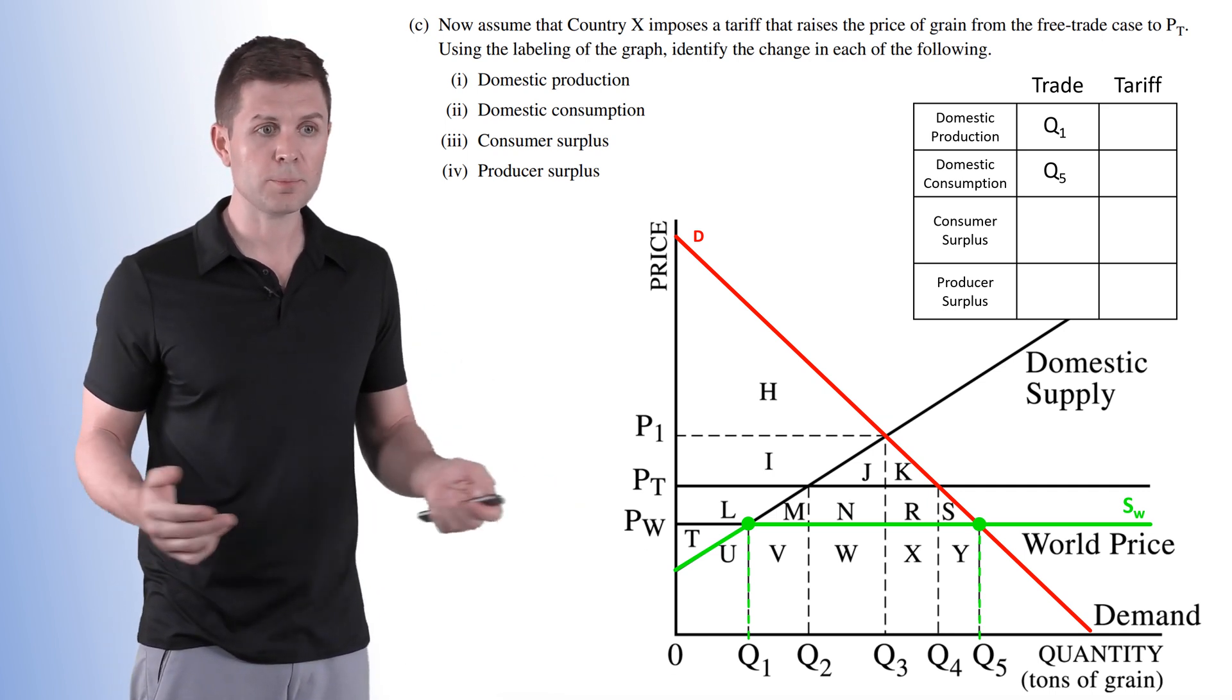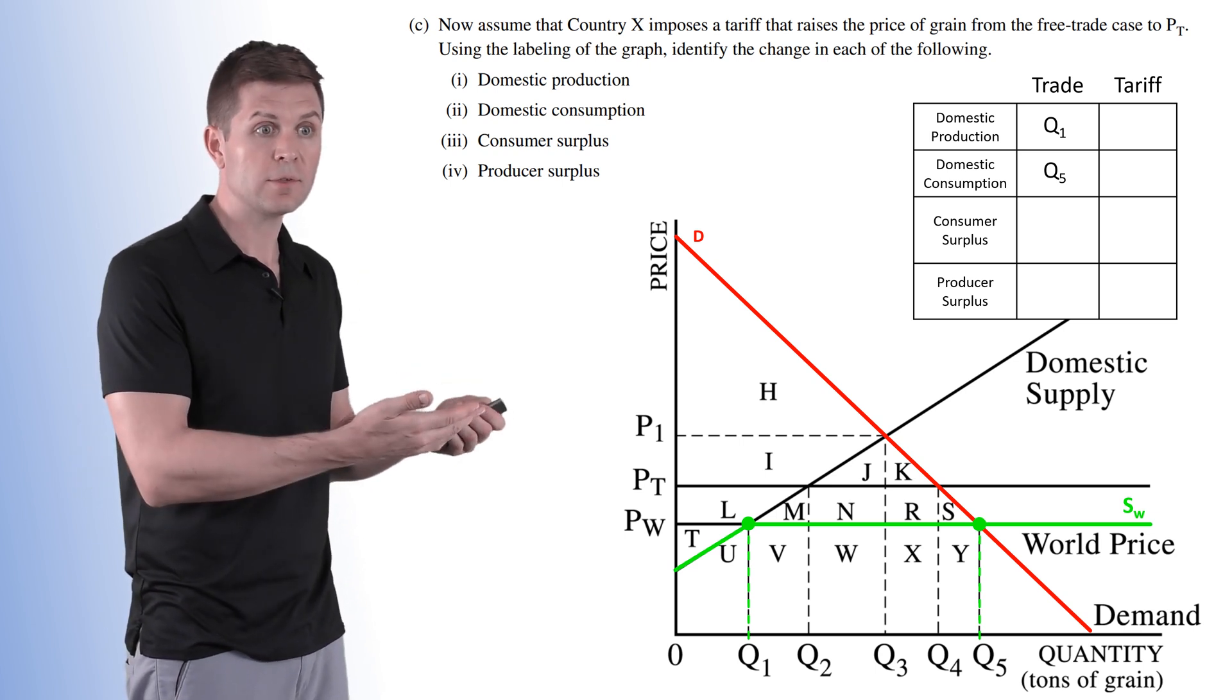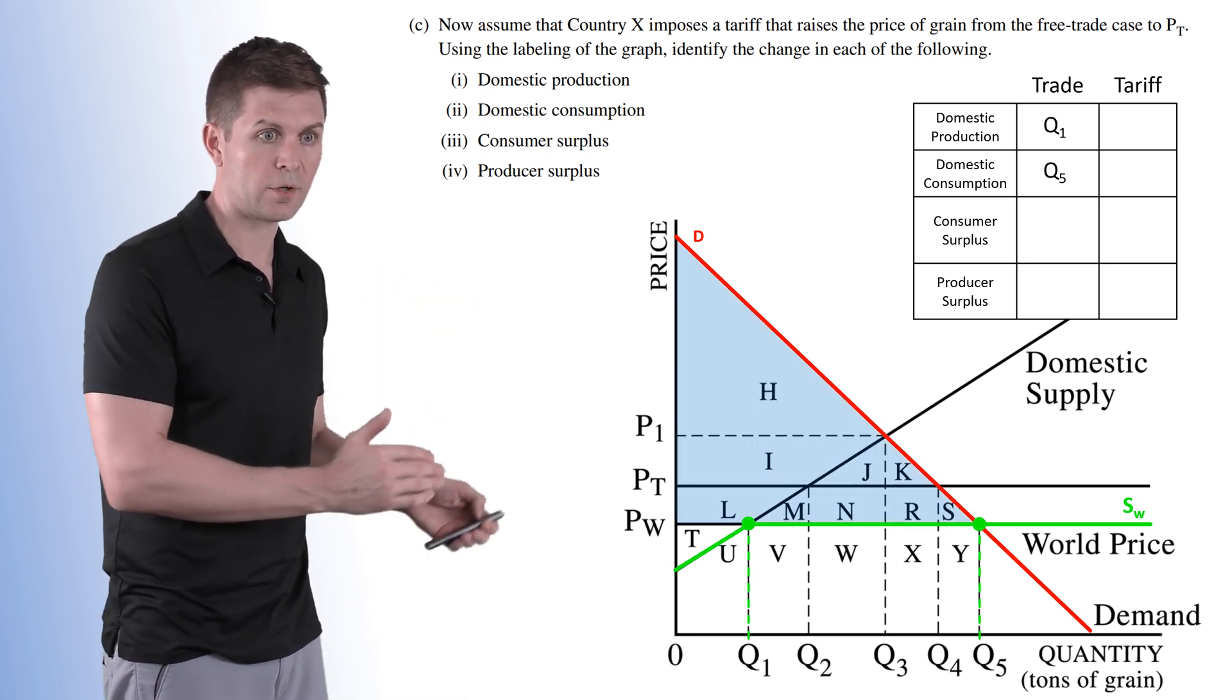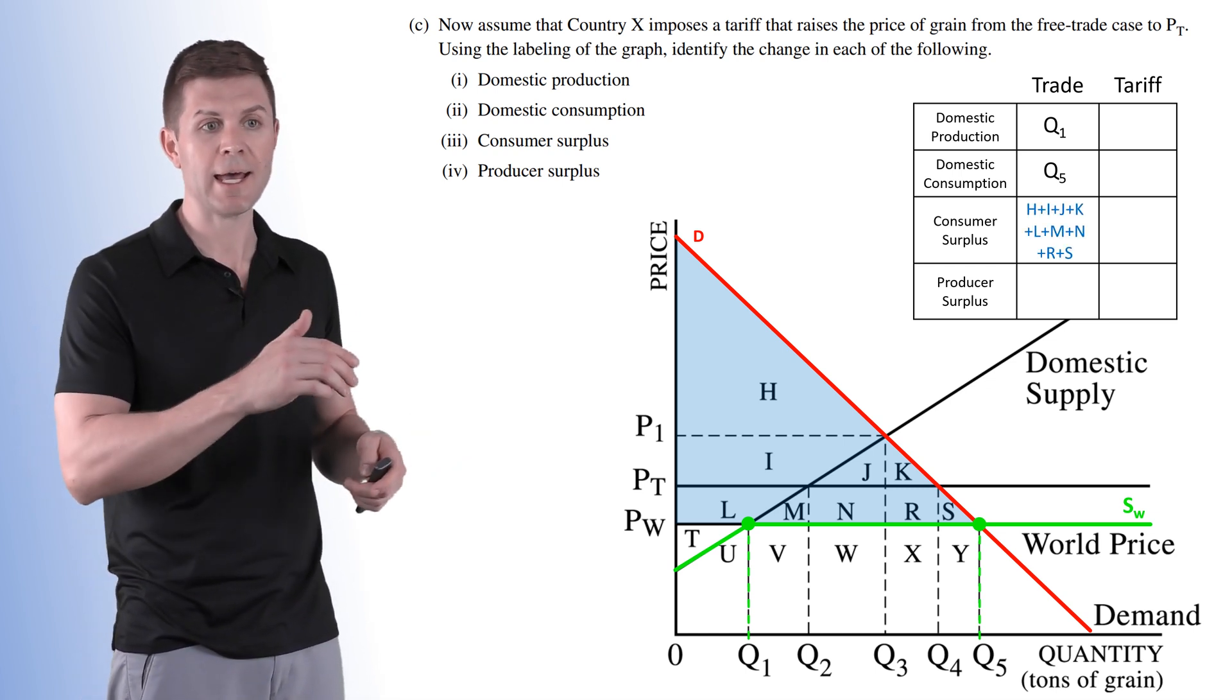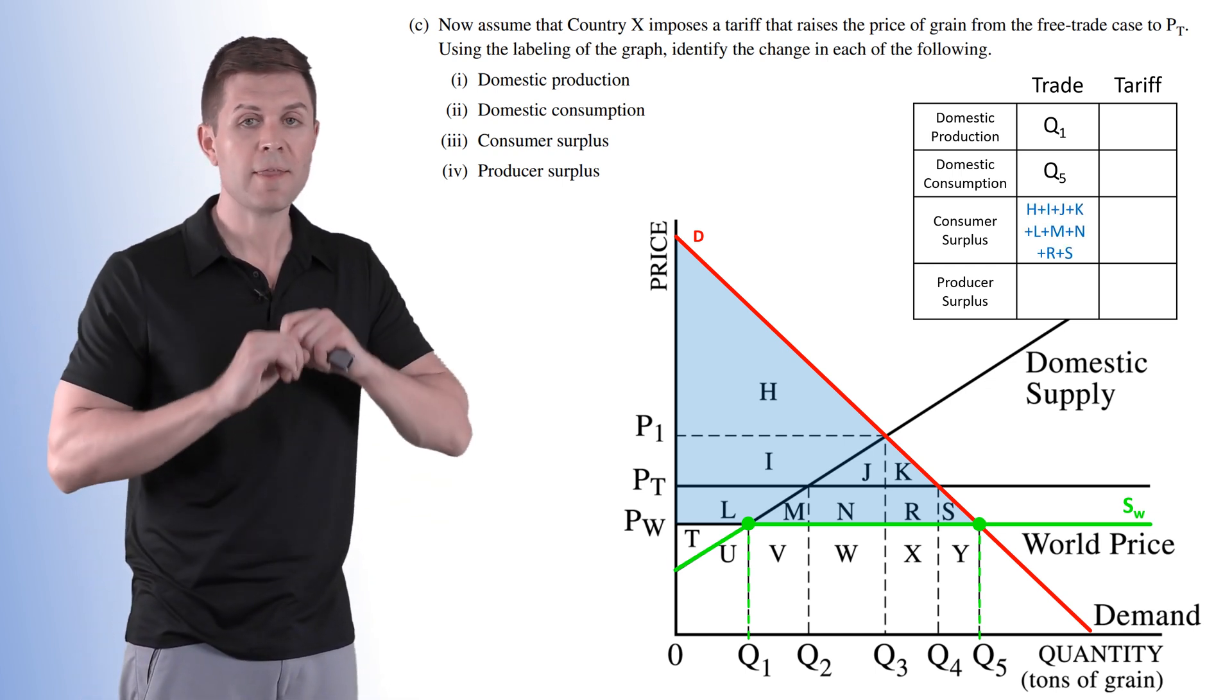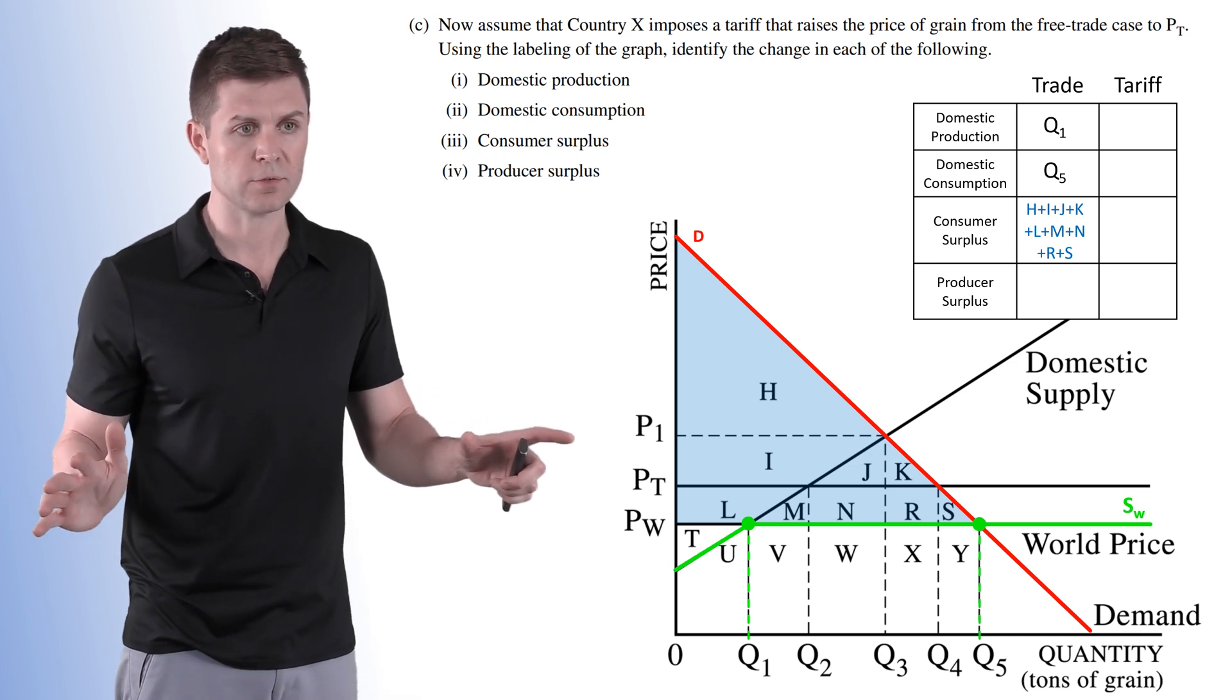Now consumer surplus, everything above the price but below the demand curve. That's going to be HI, JK, L, M, N, and RS. That total area represents our consumer surplus.